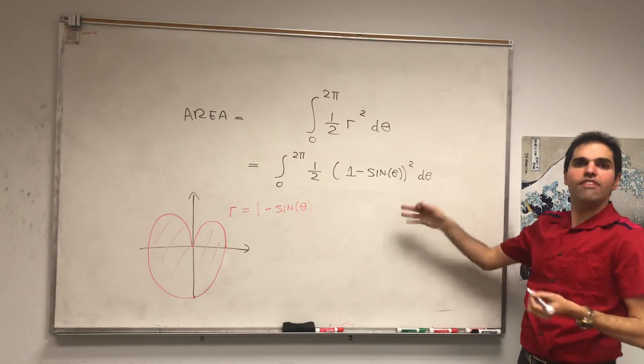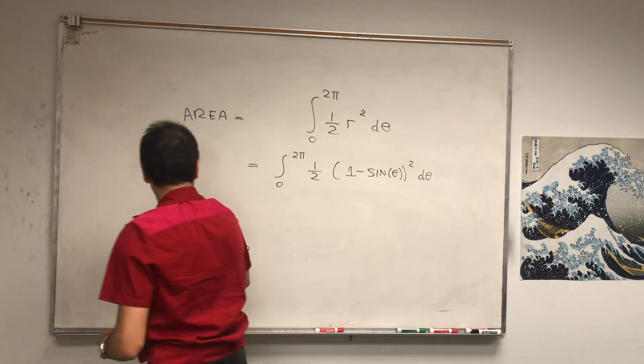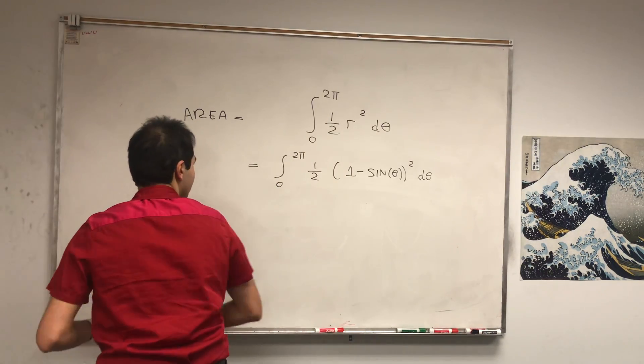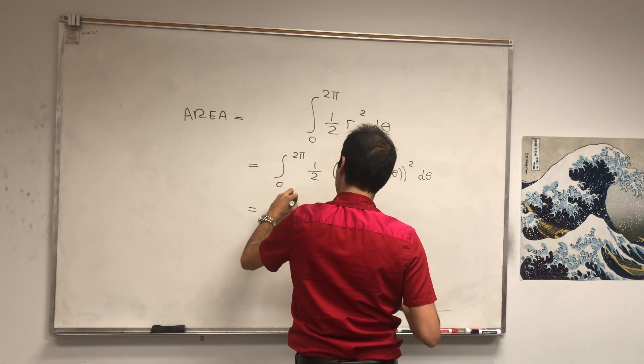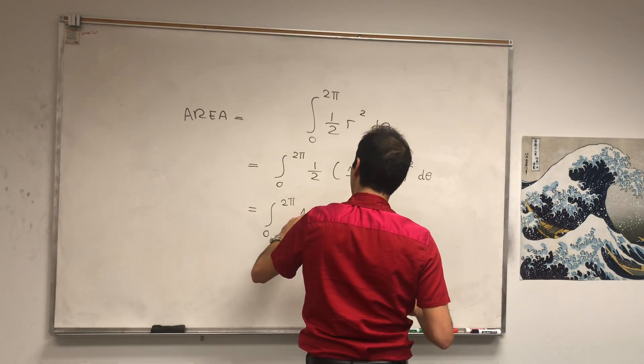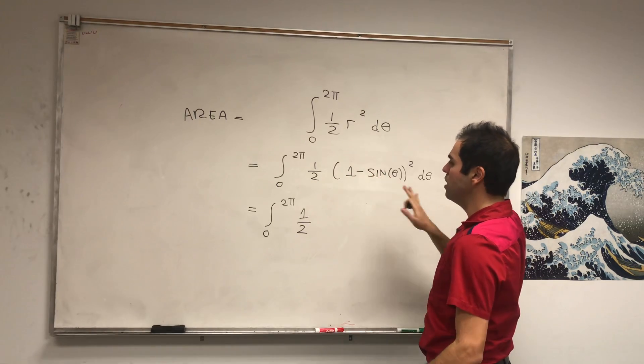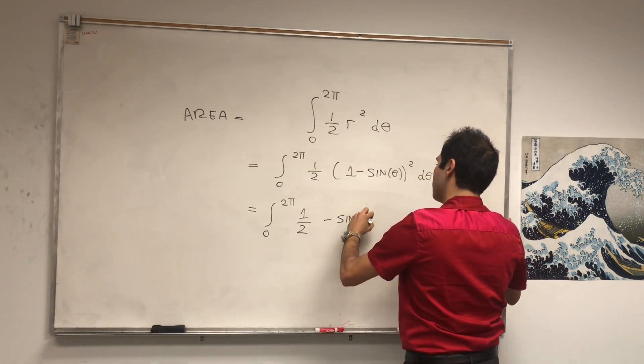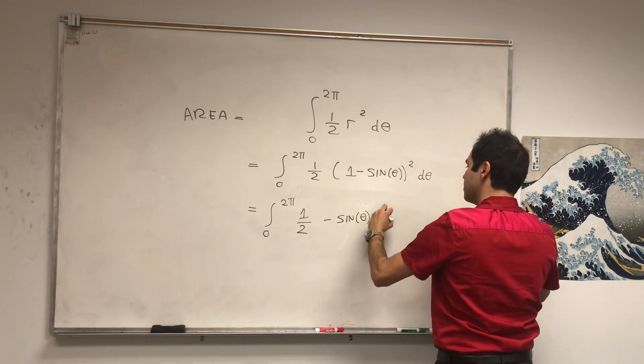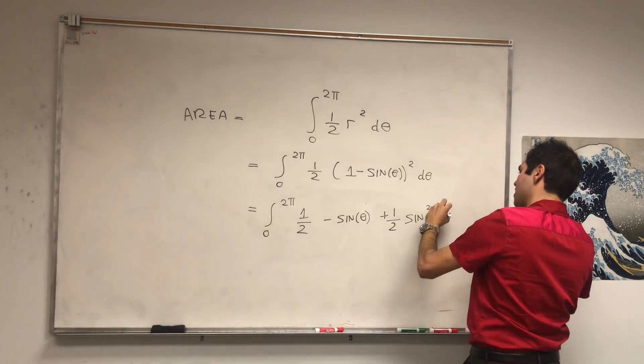And then it becomes the integral from 0 to 2 pi of 1 half, 1 minus sine of theta, squared d theta. And then this we can just evaluate, for instance, by expanding out, so what we get then is the integral from 0 to 2 pi of 1 half minus sine of theta, plus 1 half sine squared of theta, d theta.